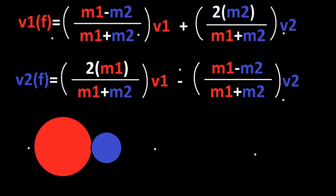So now for finding the final velocity of the balls, we're going to use two separate equations. For the red ball, we're going to use m1 minus m2 over m1 plus m2 times v1 plus 2m2 over m1 plus m2 times v2.